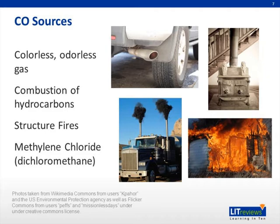Interestingly, our bodies can produce carbon monoxide in vivo when our liver converts methylene chloride, also known as dichloromethane, to carbon monoxide. This compound methylene chloride is a common industrial solvent most often found in paint-stripping compounds.